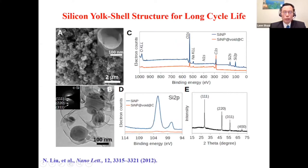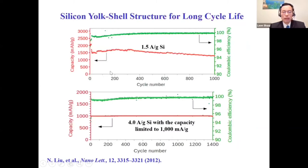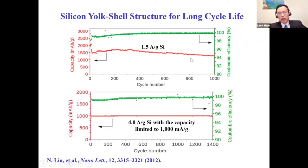Here is another example combining the three strategies: the well-known yolk-shell structure. You start with a nano-silicon particle coated with a carbon coating, and introduce engineered voids between the coating and the silicon. This work comes from the Yi Cui group at Stanford University. After 1,000 cycles, specific capacity is still above 1,300 mAh per gram.